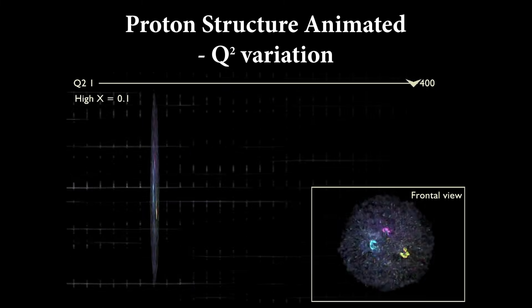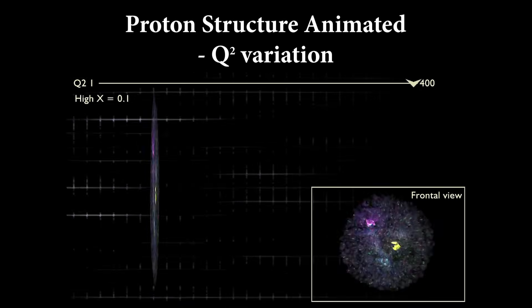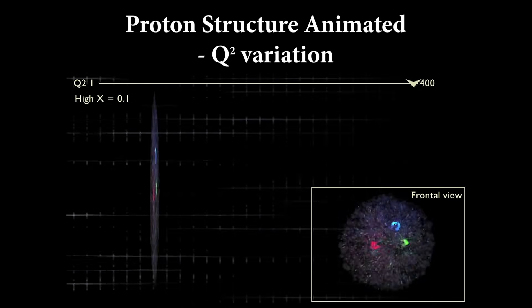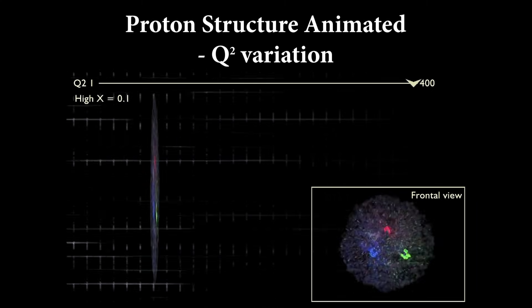But again, the squashing of the spherical proton into the pancake-like objects complicates the ability of the observer to extract the proton structure and underlying quark-gluon interactions.